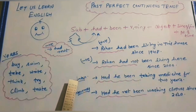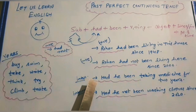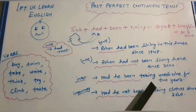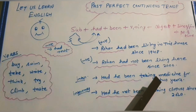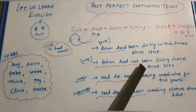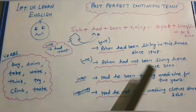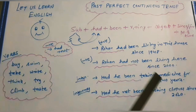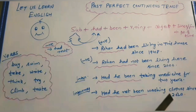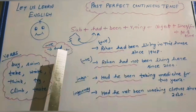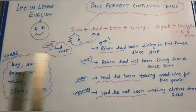In the interrogative sentences, had comes in front of the subject. Had he been taking medicine for two years? Here we have used 'since' with a proper point of time like the year 2000. We use 'for' when we don't know the specific point — just a duration. For interro-negative: Had he not been washing clothes since 2020?